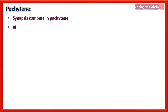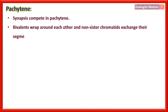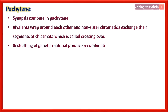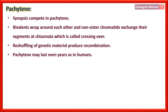Pachytene: synapsis completes. Bivalents wrap around each other, and non-sister chromatids exchange their segments at chiasmata — this is called crossing over. So crossing over occurs in Pachytene stage of Prophase 1. Reshuffling of genetic material produces recombination. Pachytene may last even years, as in humans.